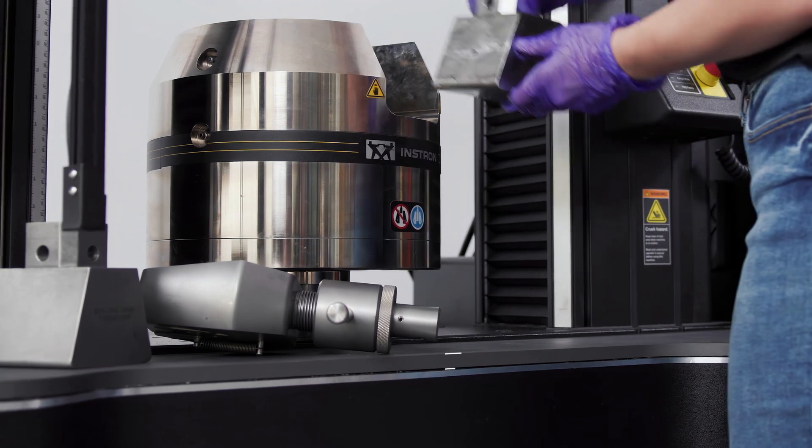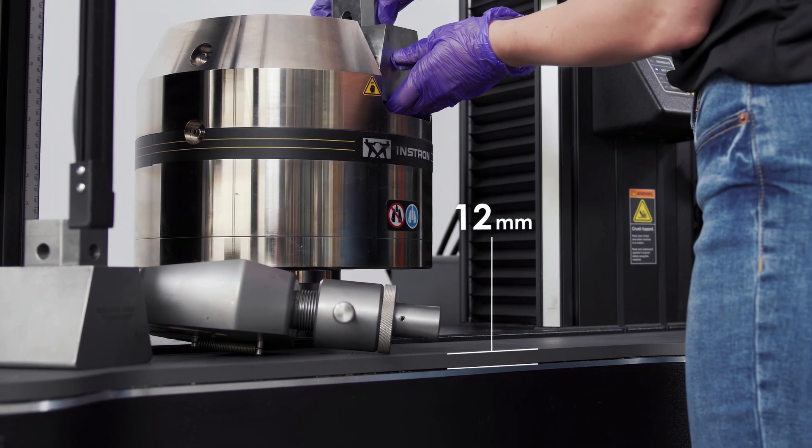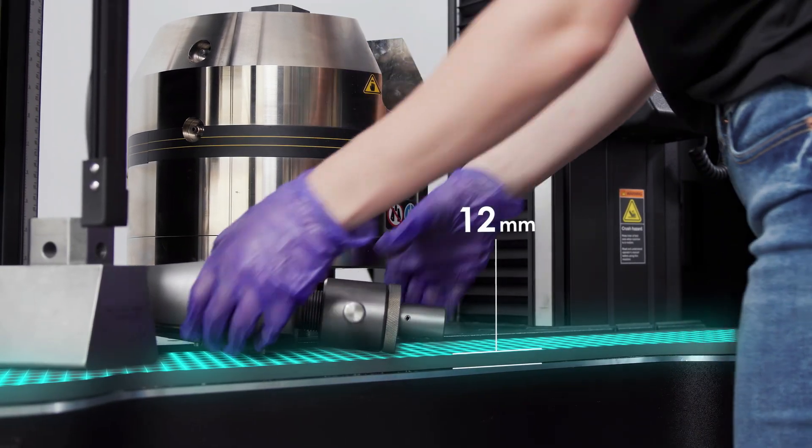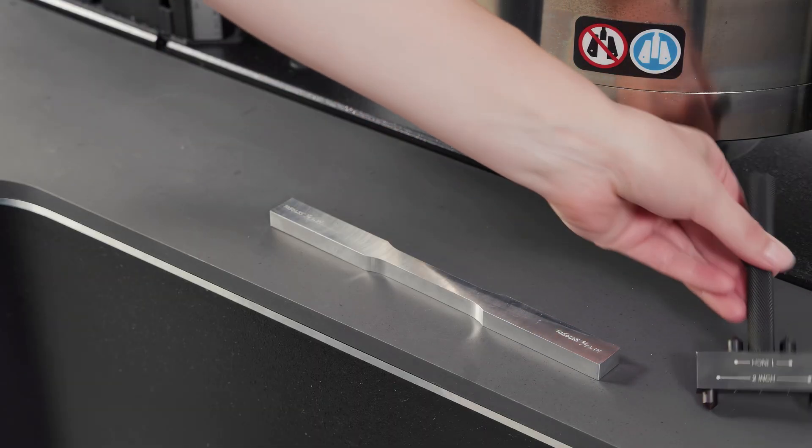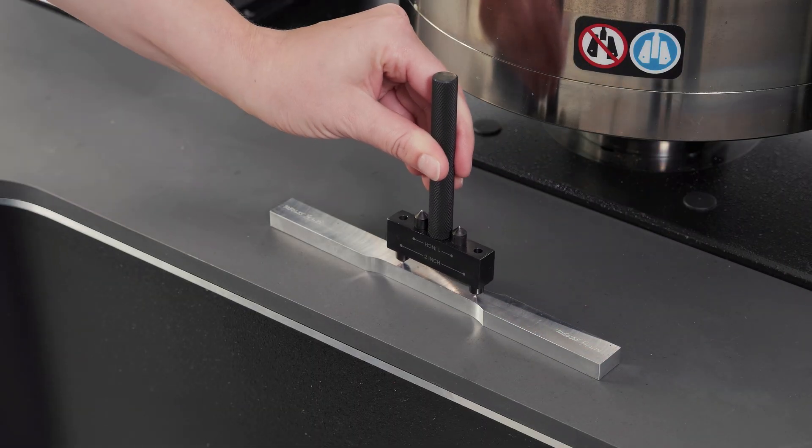The durable metal work surface is 12 millimeters thick and treated with an abrasion-resistant ceramic coating, allowing it to withstand the day-to-day demands of testing high-strength materials.